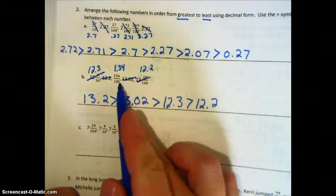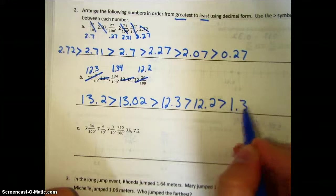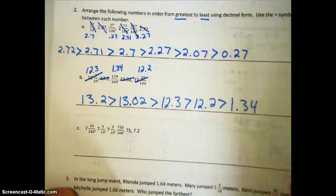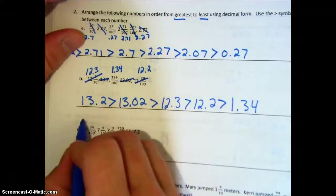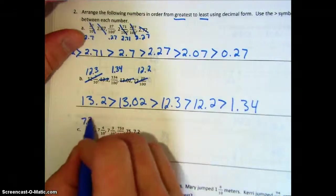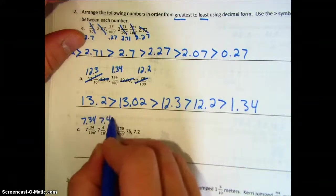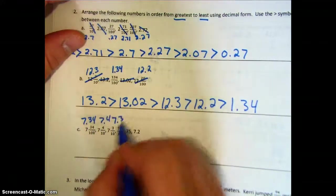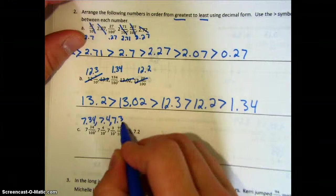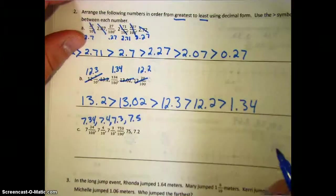Now all we're left with is one and thirty-four hundredths. Moving to the next problem, we have seven and thirty-four hundredths, seven and four-tenths, seven and three-tenths, and seven and fifty-hundredths.